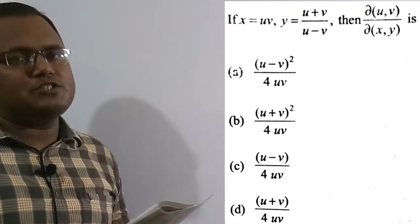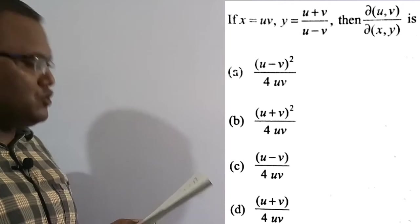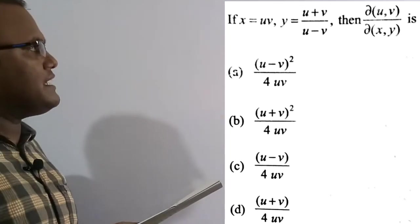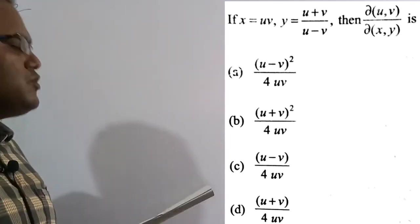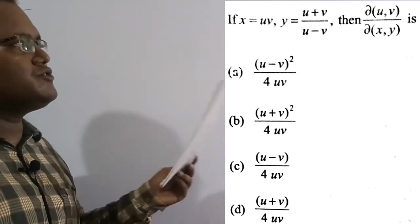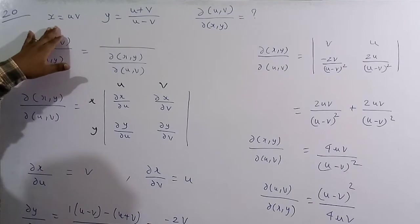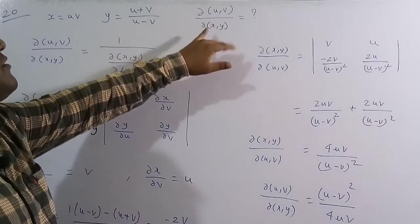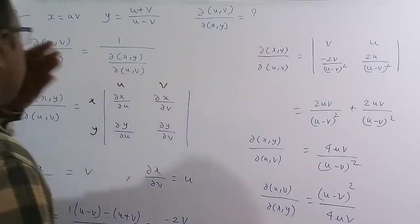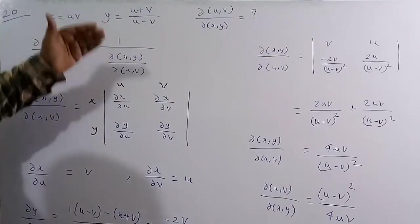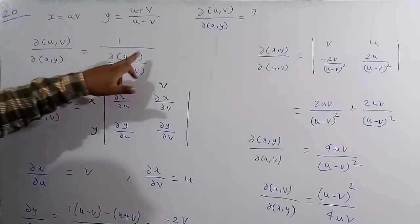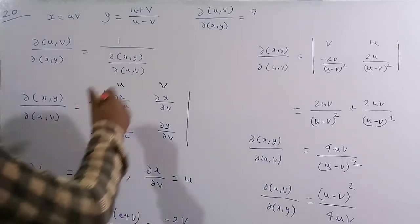Now solving the 20th (last) question: if x = uv and y = (u+v)/(u−v), find ∂(u,v)/∂(x,y). Option A, (u−v)²/(4uv), is correct. We can write ∂(u,v)/∂(x,y) = 1 / [∂(x,y)/∂(u,v)], which is the reciprocal of the Jacobian.